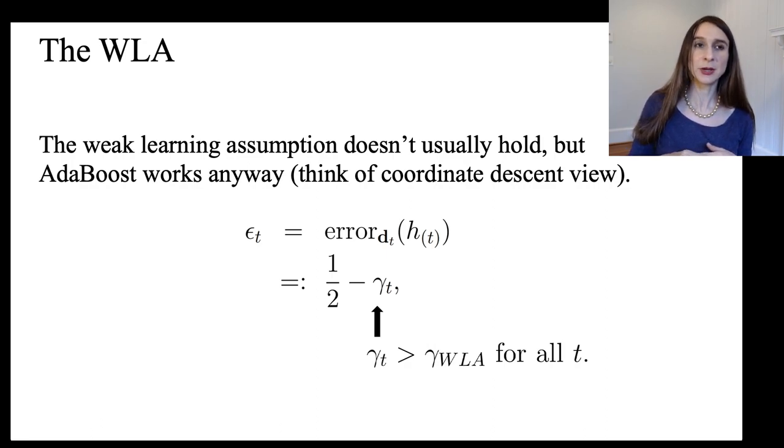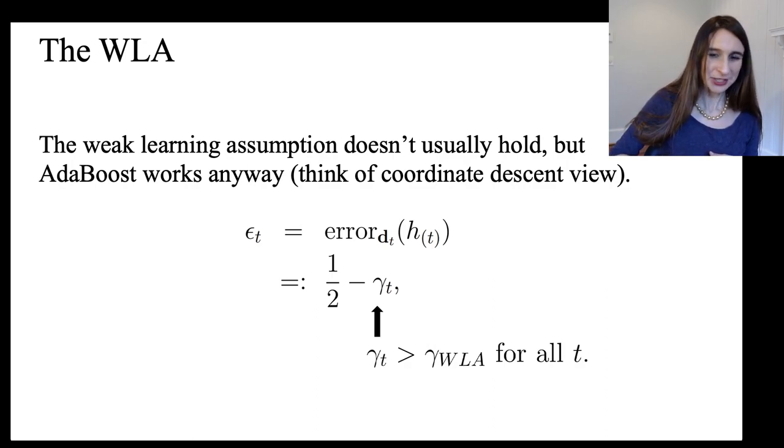And the way you can think about why this is true is to think about the fact that AdaBoost is coordinate descent on the exponential loss. So AdaBoost is still trying to minimize the loss by minimizing the misclassification error by minimizing the exponential loss. And so I just want to remind you what the weak learning assumption is, which is that no matter which weighted data set you give AdaBoost,